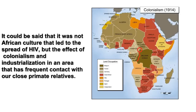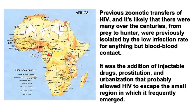It could be said that it was not African culture that led to the spread of HIV, but the effect of colonialism and industrialization in an area that had frequent contact with our close primate relatives. Previous zoonotic transfers of HIV — and it's likely that there were many over the centuries, from prey to hunter — were previously isolated by the low infection rate from anything but blood-to-blood contact. It was the addition of injectable drugs, prostitution, and urbanization that probably allowed HIV to escape the small region in which it frequently emerged.